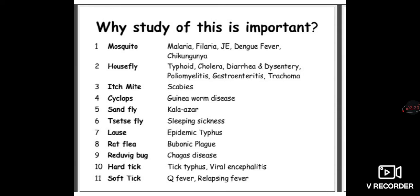We need to study these arthropods because mosquitoes cause malaria, filariasis, Japanese encephalitis, dengue fever, and chikungunya. House flies cause typhoid, cholera, diarrhea, poliomyelitis, gastroenteritis, and trachoma. Itch mite causes scabies, Cyclops causes guinea worm disease, sandfly causes kala-azar, tsetse fly causes sleeping sickness, louse causes epidemic typhus, rat flea causes bubonic plague, reduviid bug causes Chagas disease, hard tick causes tick typhus and viral encephalitis, and soft tick causes Q fever and relapsing fever.